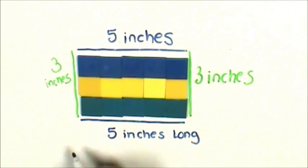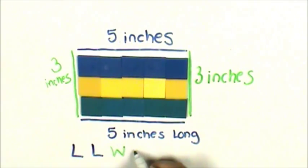When I look at my array, I can see that I measured the length, I measured the other length, I measured the width, and the other width.